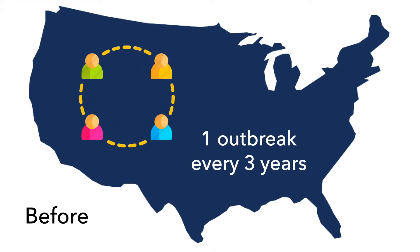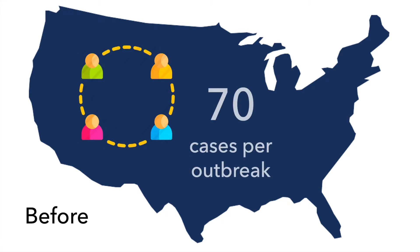Before pulse field gel electrophoresis and whole genome sequencing, approximately one outbreak occurred every three years with an average size of 70 cases of illness per outbreak. Because there were so many cases,